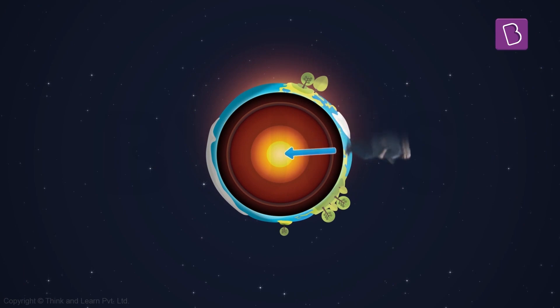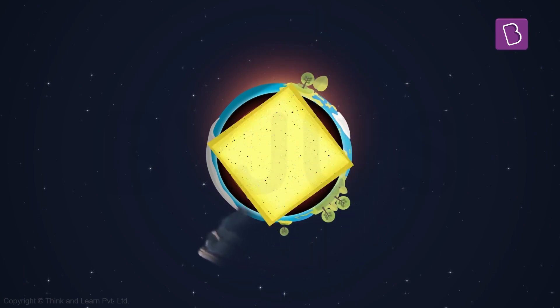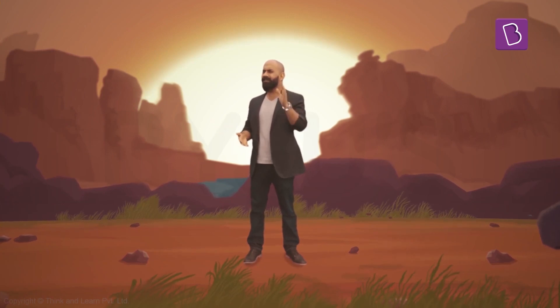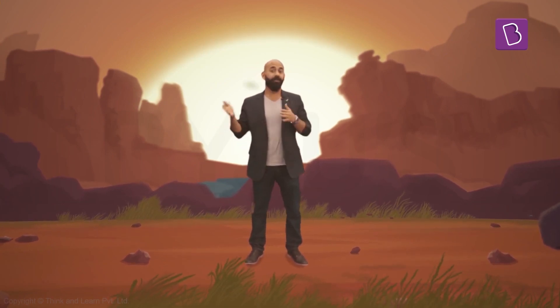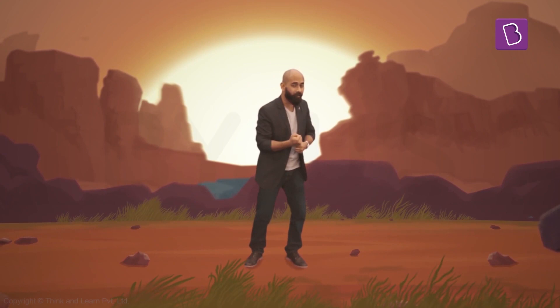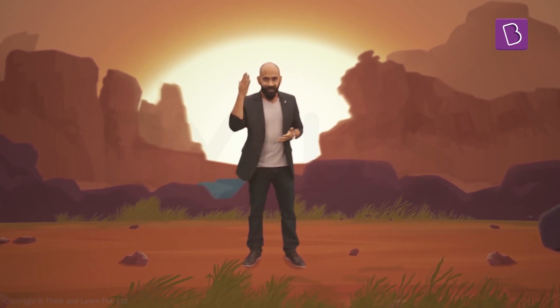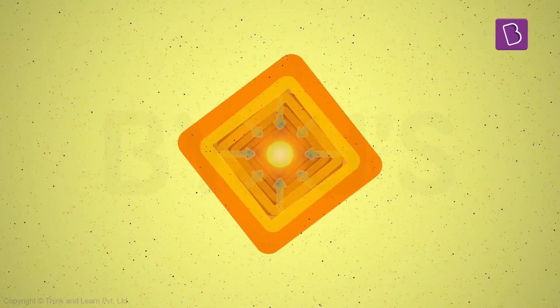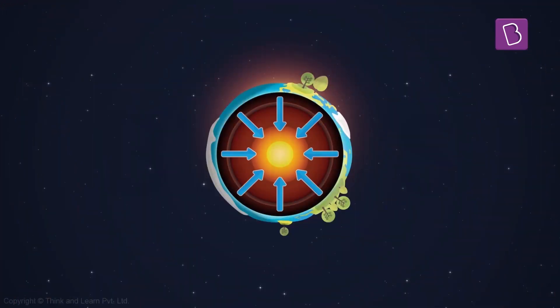So irrespective of where you are on the Earth, if you draw an arrow toward the center of the Earth, that represents downward. Okay, so what does this say about gravity? We know gravity always pulls in the downward direction, which means gravity must always pull toward the center of the Earth. And that's right—gravity does always pull only toward the center of the Earth.